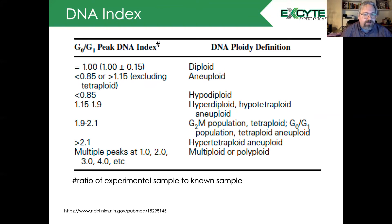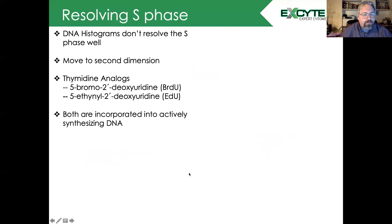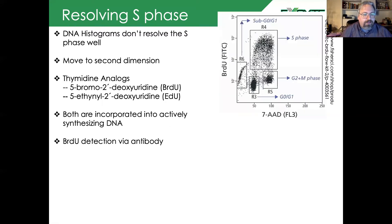The DNA histogram does not resolve the S phase very well, so how can we do that? We can move into a second dimension. We can use thymidine analogs like BrdU and EdU which are actively incorporated into synthesizing DNA. In the case of BrdU, we detect this via an antibody, which requires us to fragment the DNA a bit.